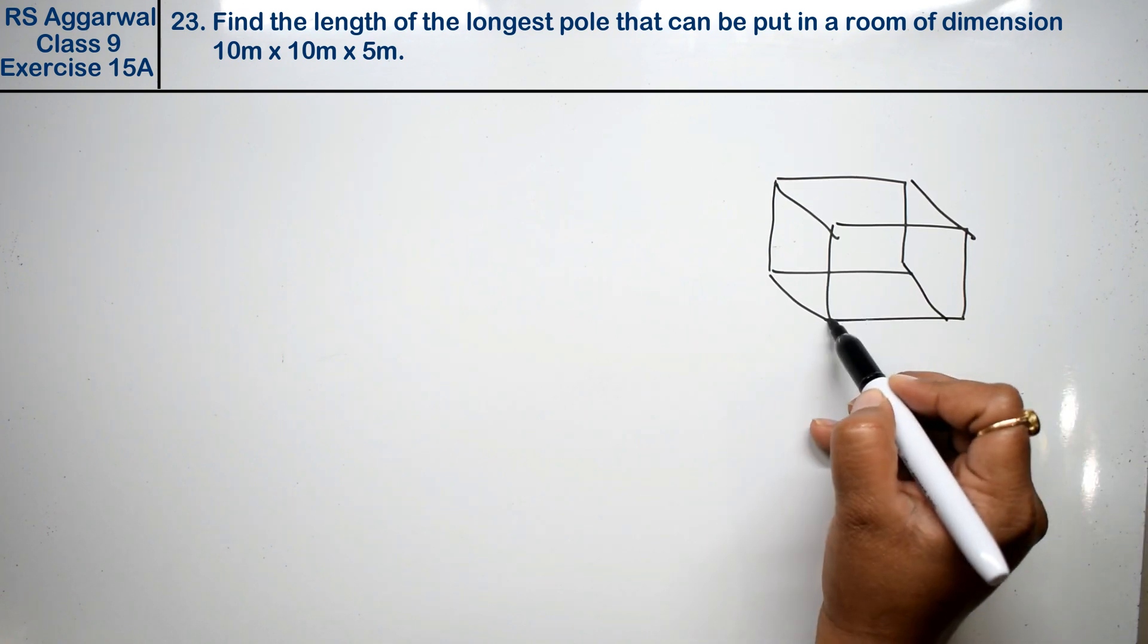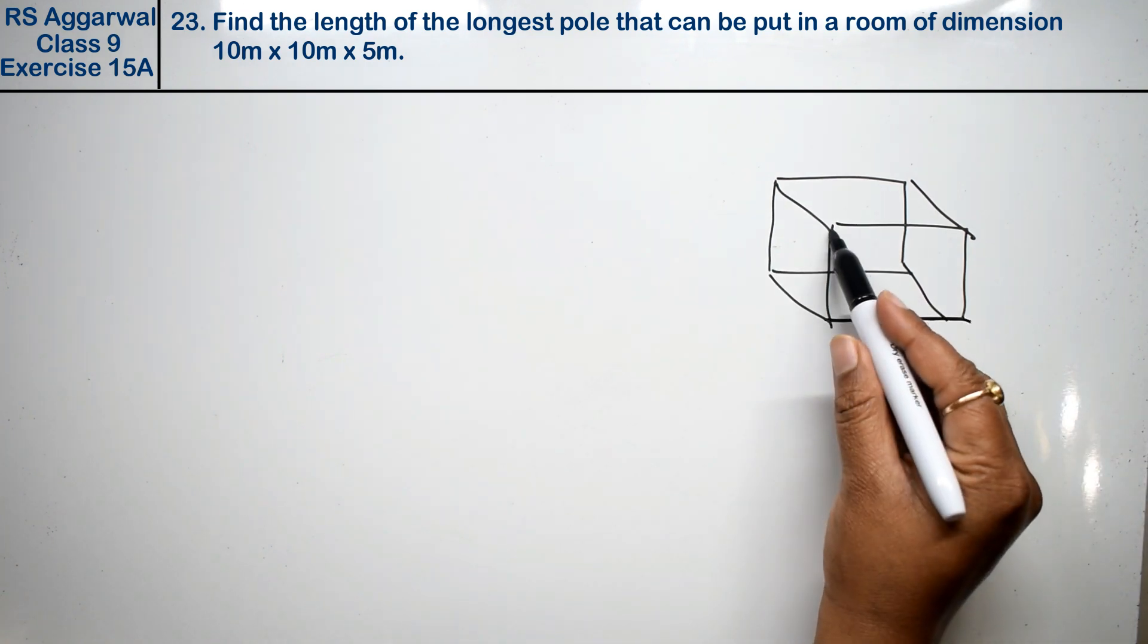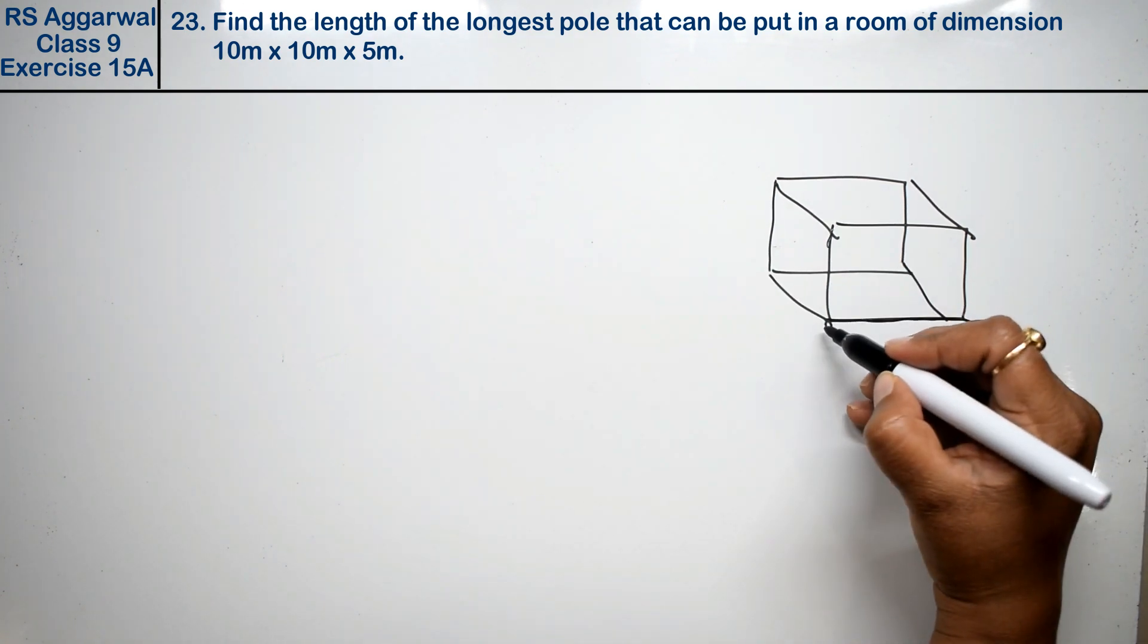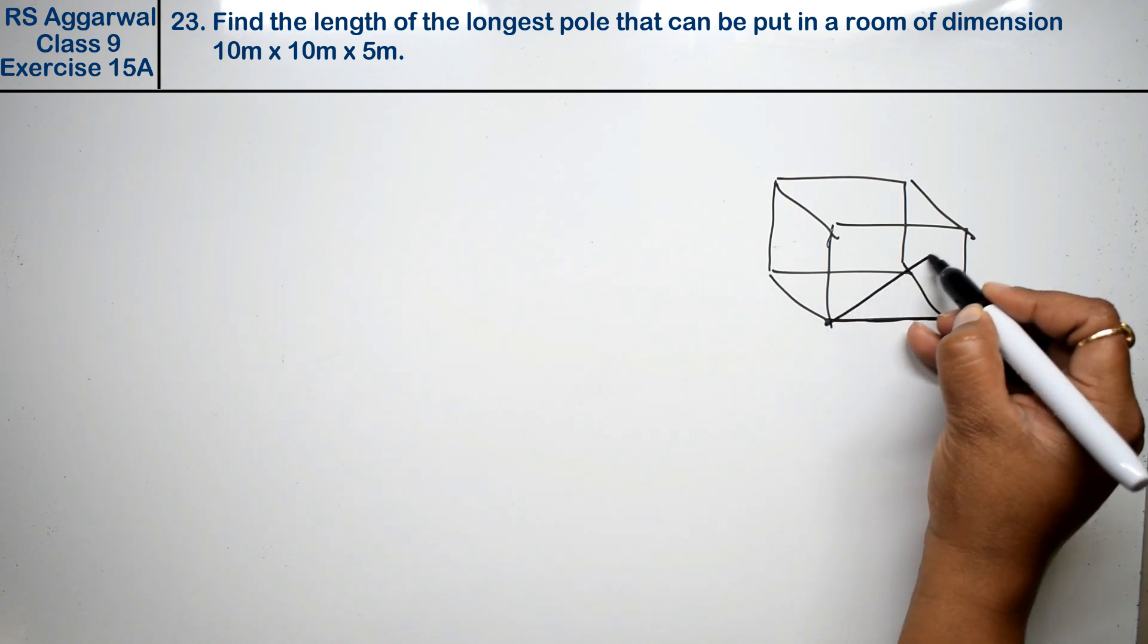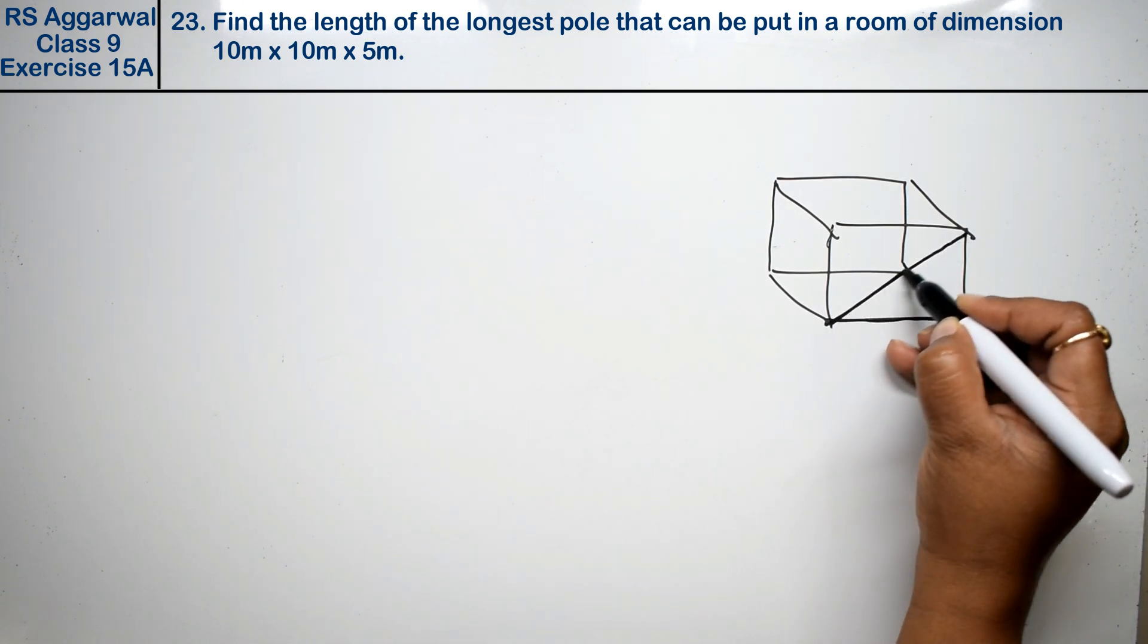The longest pole cannot be put like this or like this. We can always keep the longest pole so it can be put like this. What is it? It is diagonal.